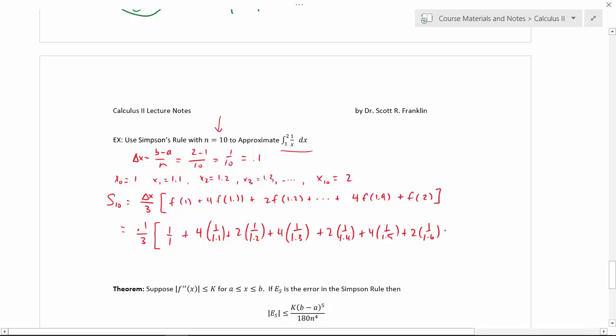2 times 1 over 1.6 plus 4 times 1 over 1.7 plus 2 times 1 over 1.8 plus 4 times 1 over 1.9, and now I'm to my last value, 2, so plus 1 over 2. And I plugged all that in my calculator already and got 0.693150.